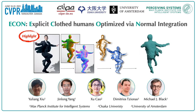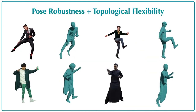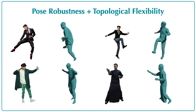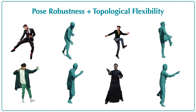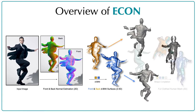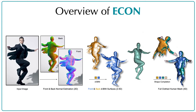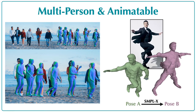We present Econ, which stands for Explicit Clothed Humans Optimized via Normal Integration. Econ reconstructs high-fidelity detailed 3D humans, even those wearing loose clothing or in challenging postures, from a single image. It combines the best properties of implicit and explicit representations, thus effectively addressing the long-standing trade-offs between pose robustness and topological flexibility. Inspired by the sandwich structure, Econ reconstructs by firstly lifting the front and back normal maps into surface patches, then using the SMPLX body model as a canvas to stitch these patches. Econ is capable of reconstructing multi-person scenes, even with occlusion, and its final output can be animated with SMPLX pose parameters.